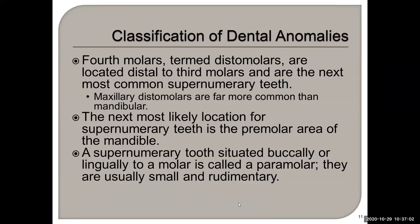Fourth molars, also called disto-molars, are located distal to the third molars and are the next most common supernumerary teeth. Maxillary disto-molars are far more common than mandibular, because maxillary supernumerary teeth outnumber those of the mandibular. Following disto-molars are supernumerary teeth in the premolar area of the mandible.